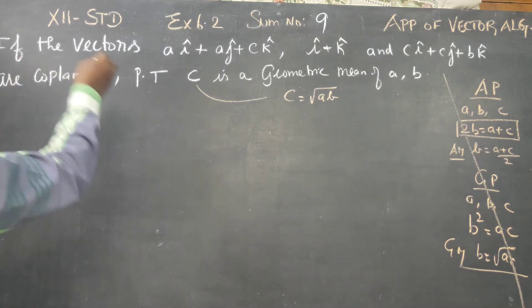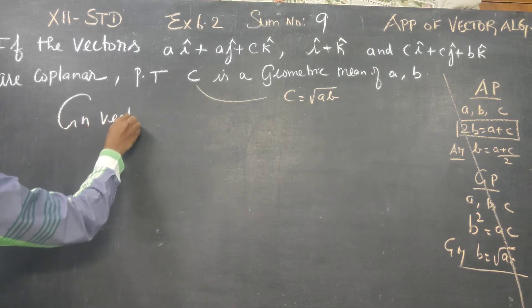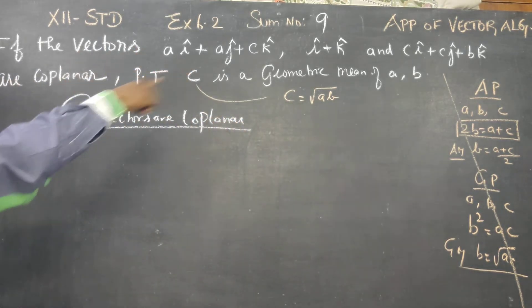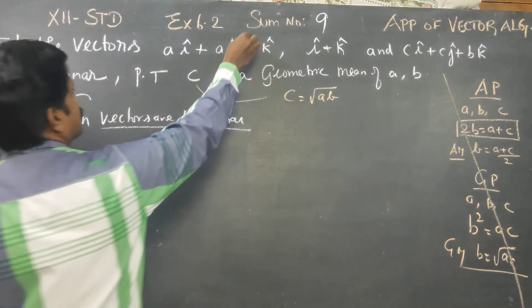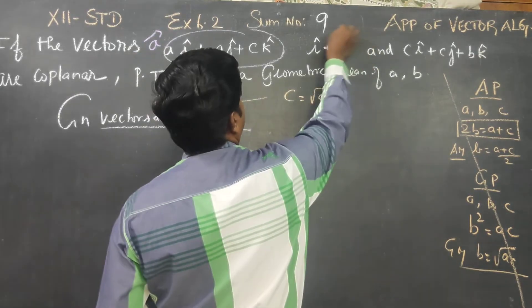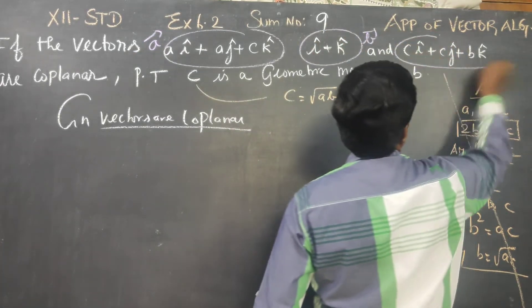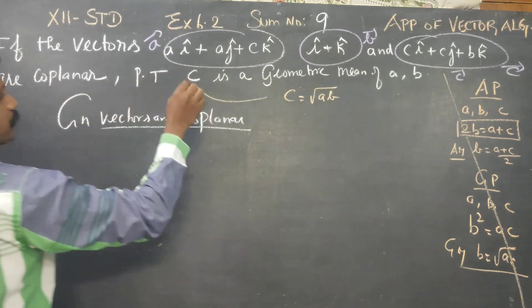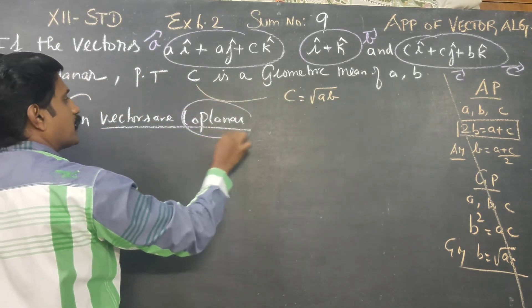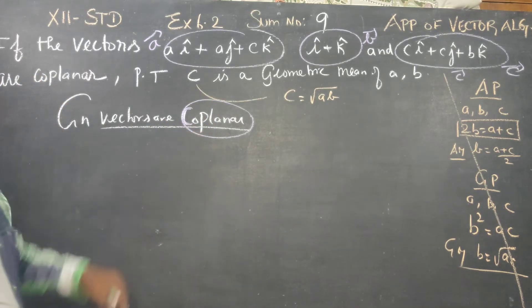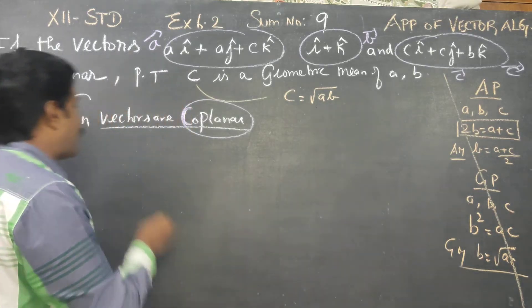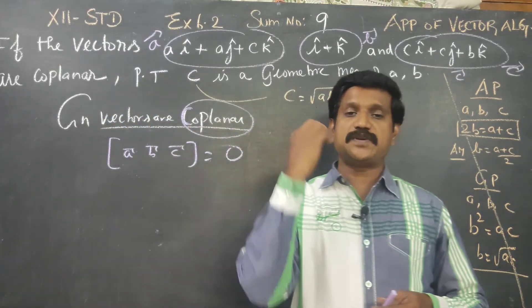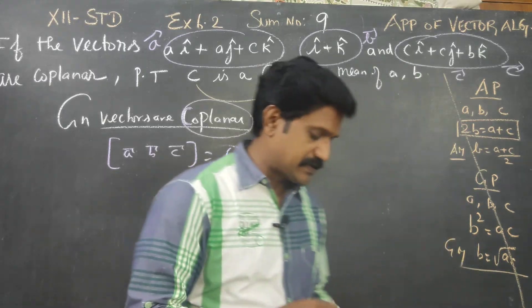What is the help line given? The given vectors are coplanar. Let us choose this as vector A, this as vector B, and this as vector C. The box product of three coplanar vectors must equal 0. That is the condition for coplanar vectors.